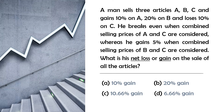A man sells 3 articles A, B, C and gains 10% on A, 20% on B and loses 10% on C. He breaks even when combined selling prices of A and C are considered, whereas he gains 5% when combined selling prices of B and C are considered. What is his net loss or gain on the sale of all the articles? Options: A) 10% gain, B) 20% gain, C) 10.66% gain, D) 6.66% gain.